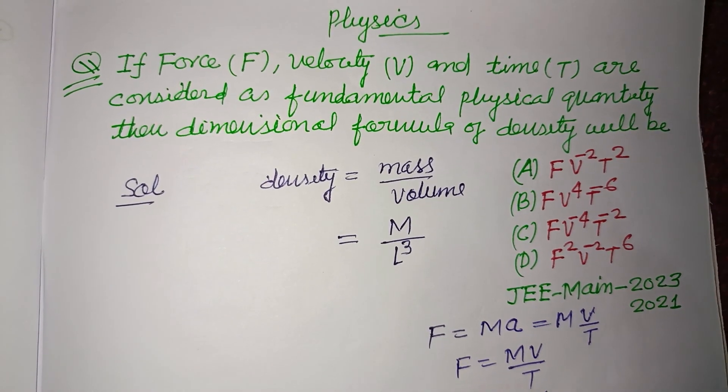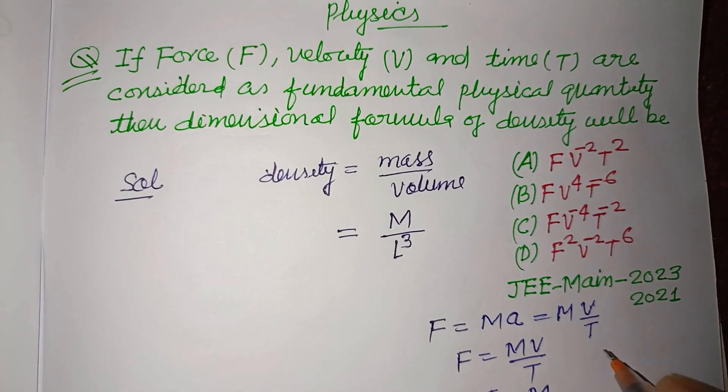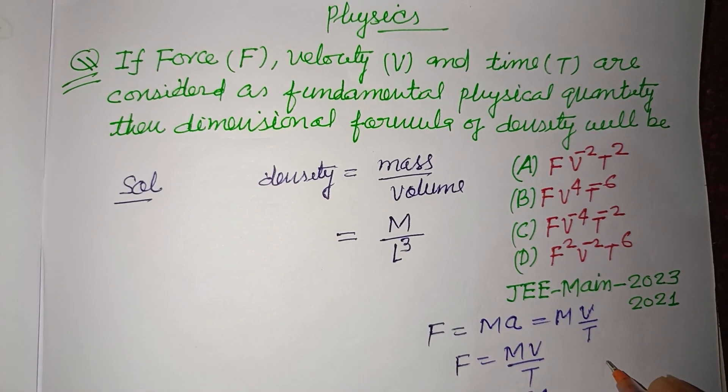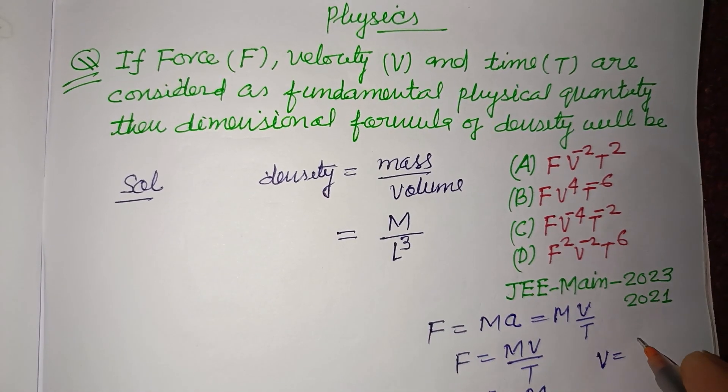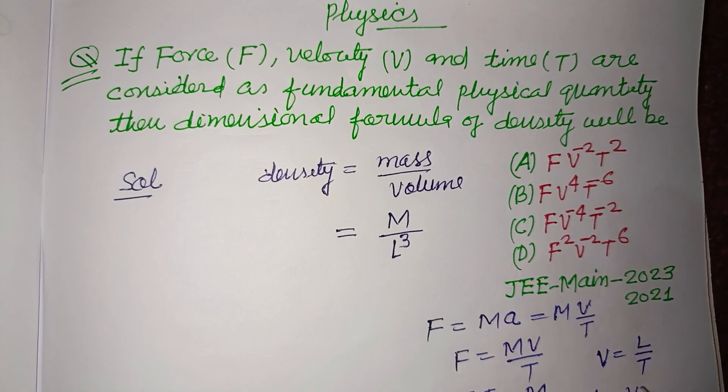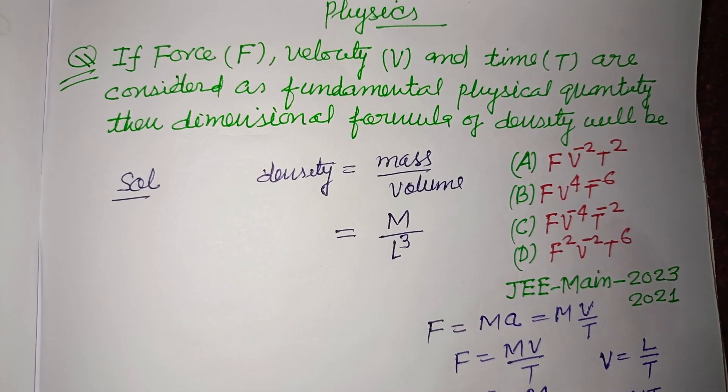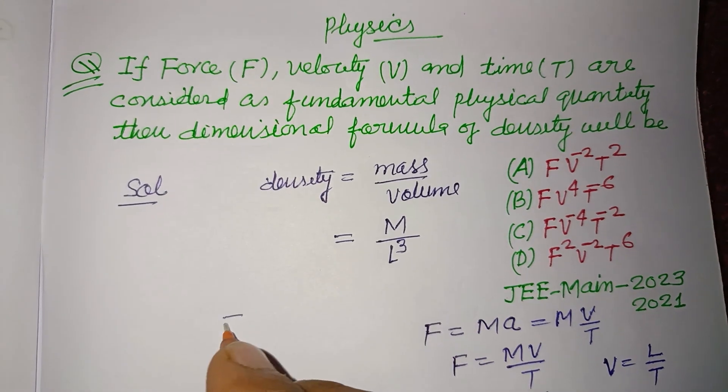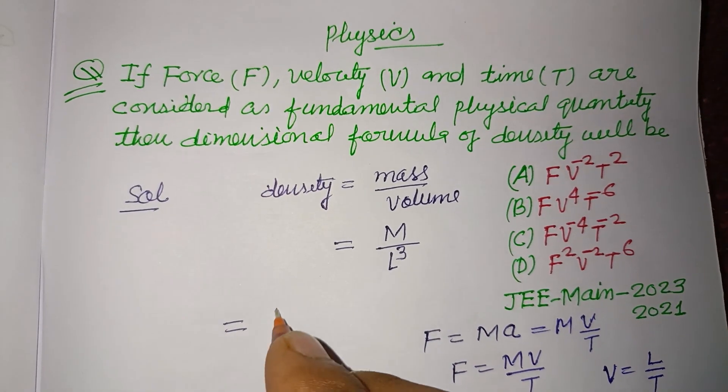You know that velocity equals distance upon time, so L equals VT. Putting these values of M and L into the density formula, we get M is FT over V, and 1 over L³ is 1 over (VT)³.